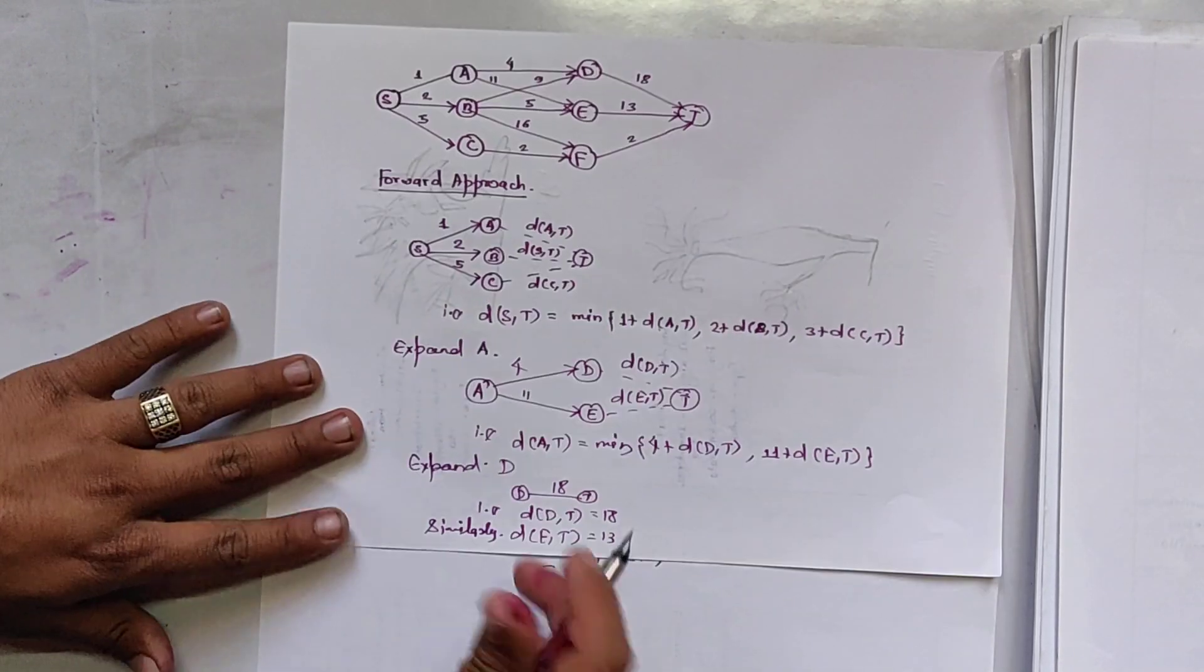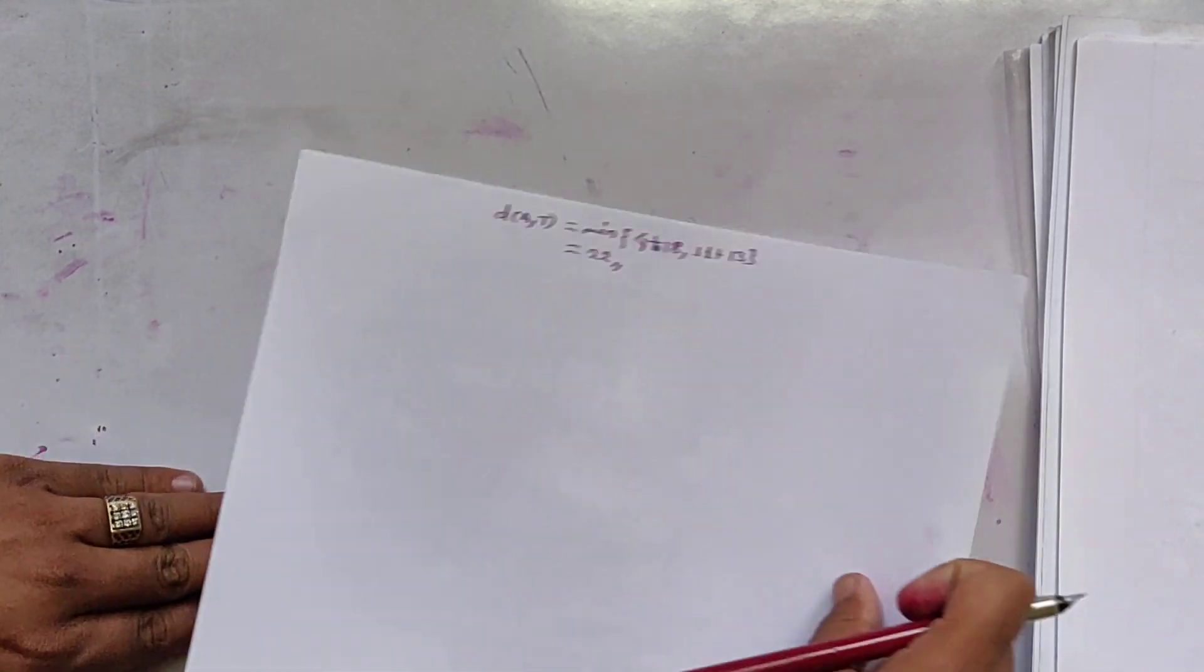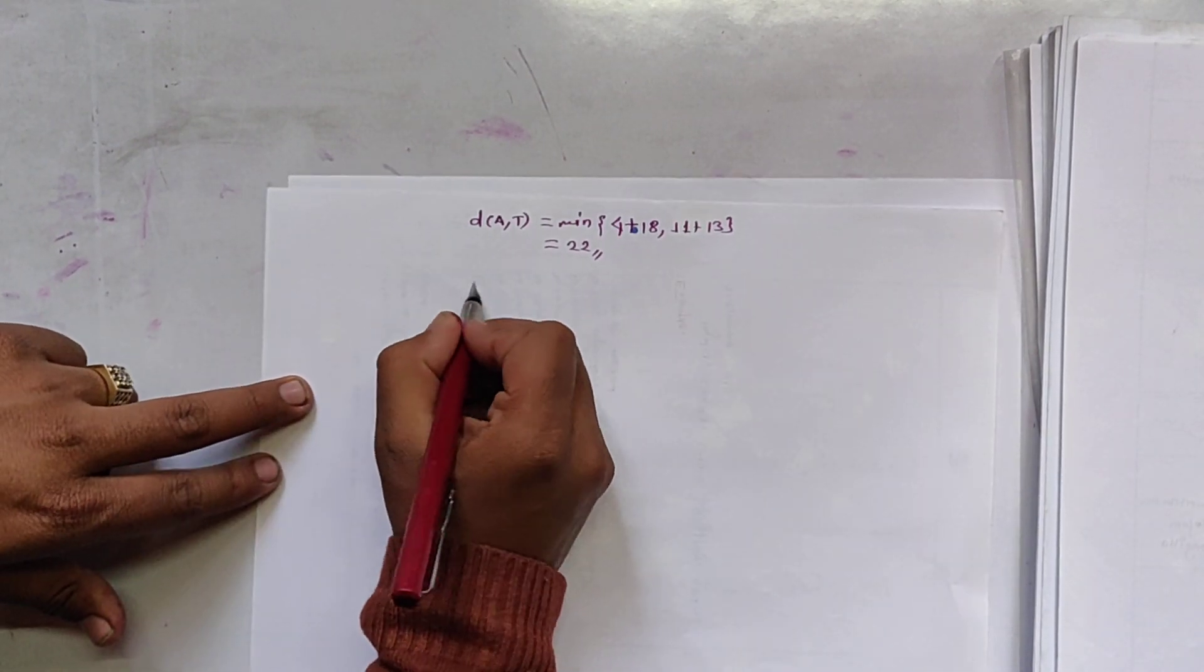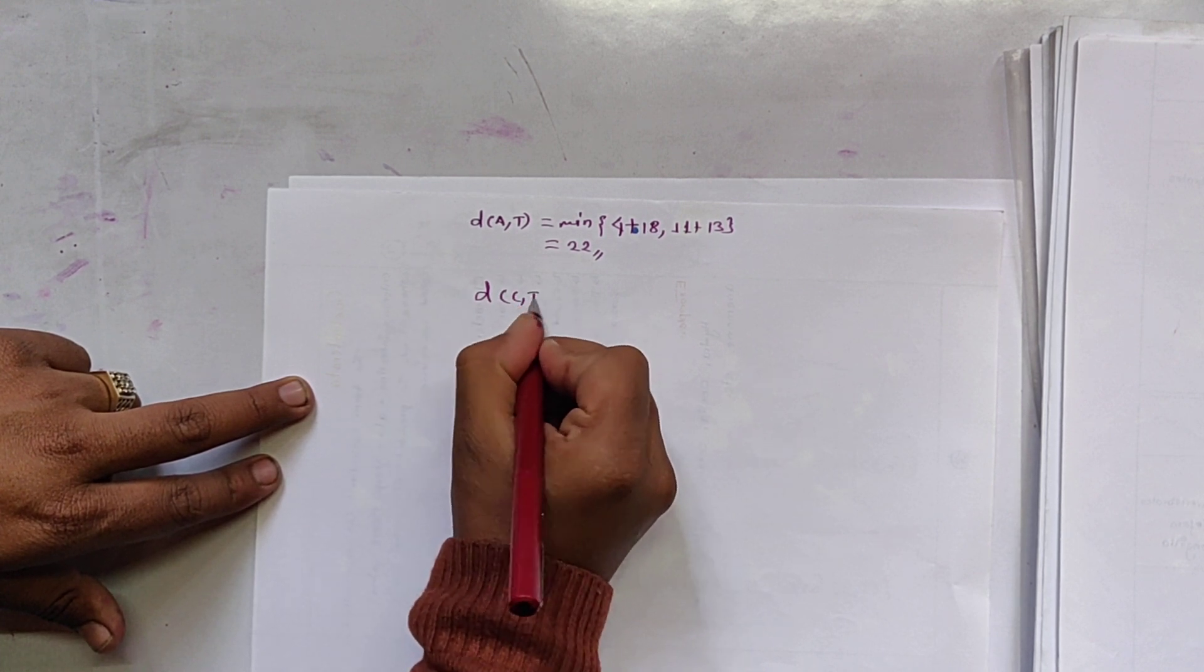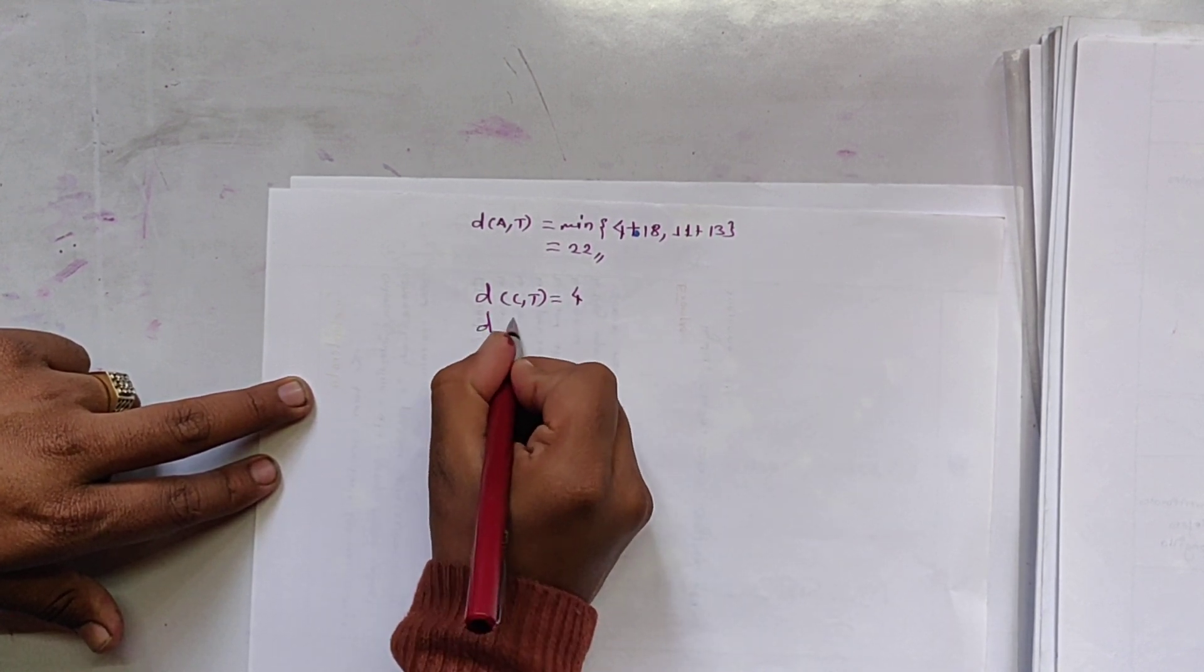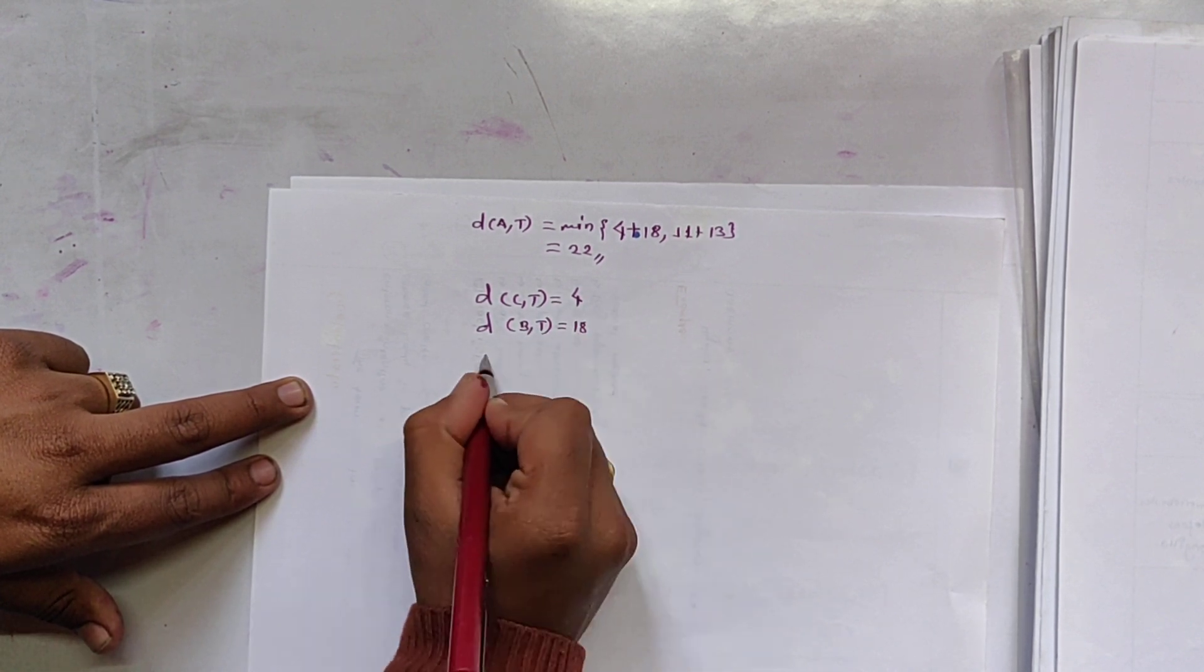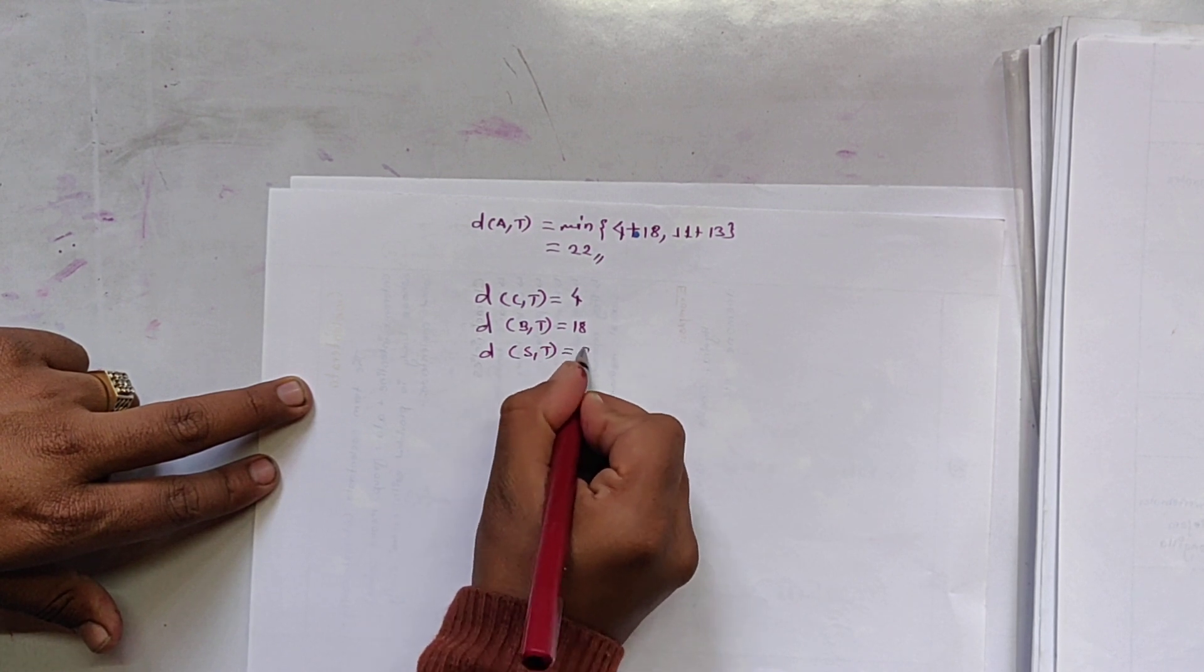Similarly, by expanding B and C, we get the value as this, like DCT is equals to 4, DBT is equals to 18, DST is equals to 9.